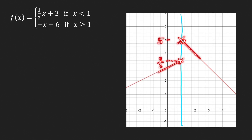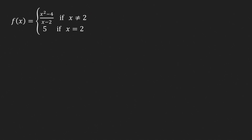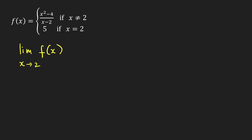Next problem: f of x equals a rational expression when x ≠ 2, and equals 5 when x = 2. Suppose we want to find the limit of f of x as x approaches 2. Here there is only one formula defined for x values close to 2 (since x ≠ 2), so we don't need one-sided limits — we can find the two-sided limit directly.